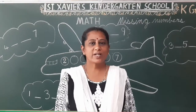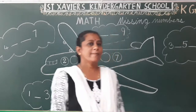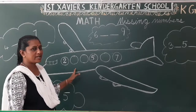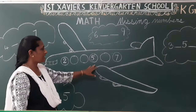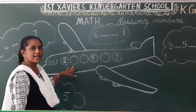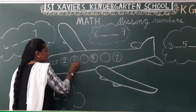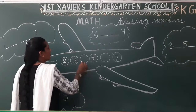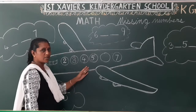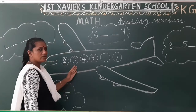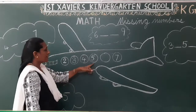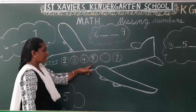Again — one to ten is coming up, very good. Now I have the missing numbers here, one to ten. What comes after two? Three. What comes after three? Four. What comes after four? Five. What comes after five? Six. Very good.